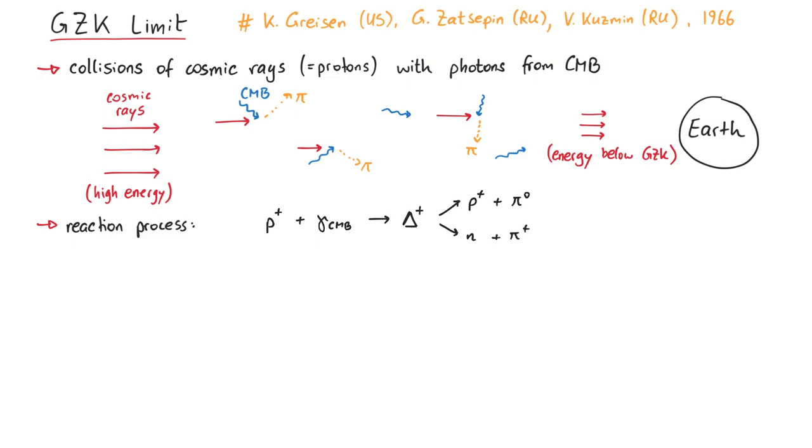Our goal is now to calculate the minimum energy such that the proton can just produce a pion. All other protons below this energy can reach us without losing more energy. For our estimation in this video, it is actually sufficient to just consider the first partial reaction, where a proton and a photon combine to a delta baryon.